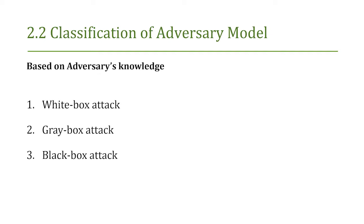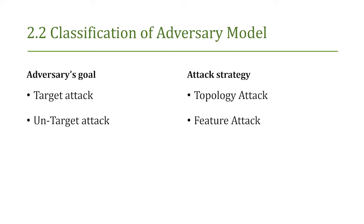With concern about the security of graph-based classification, a series of works has been done on adversarial models. Based on the adversary's knowledge of the target model, attacks can be characterized as three threat levels: white-box attack, grey-box attack, and black-box attack. Specifically, attackers possess all information of the target model in a white-box attack, limited knowledge in grey-box, and in black-box they know nothing but can make limited queries. In terms of adversary scope, there exist targeted and untargeted attacks. In a targeted attack, the attacker aims to make the model misclassify a small set of nodes, while in an untargeted attack, the goal is to misclassify as many nodes as possible.